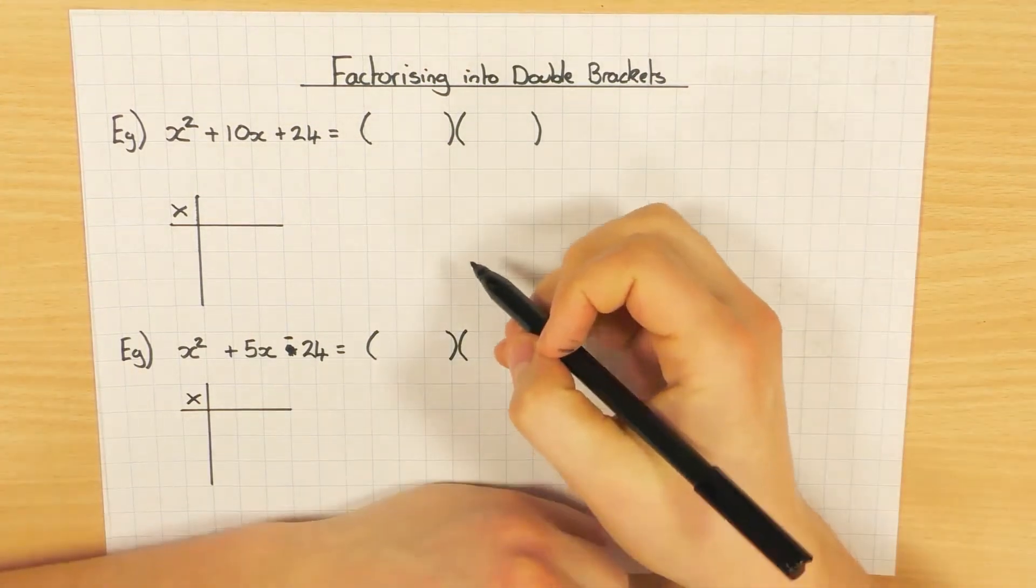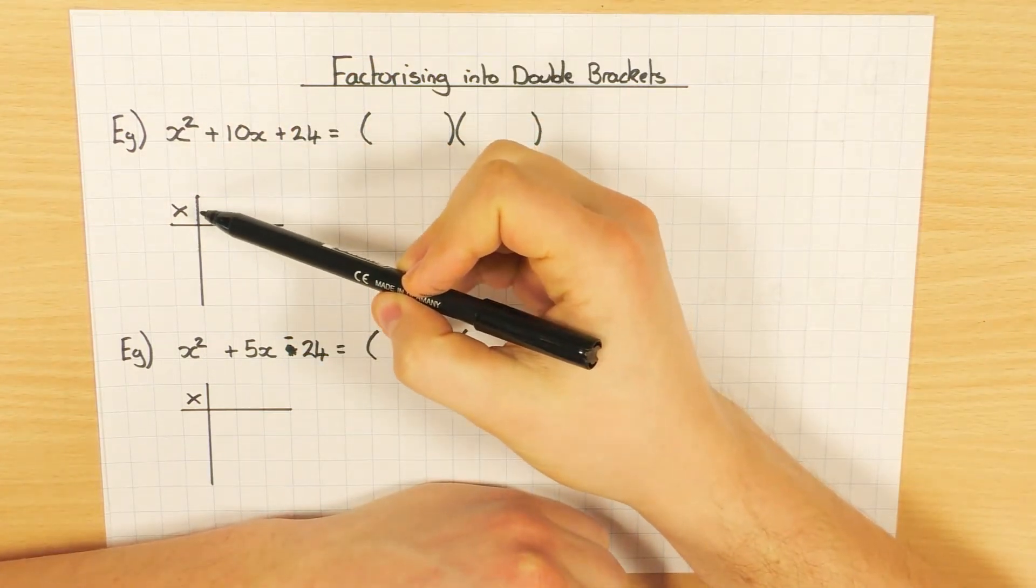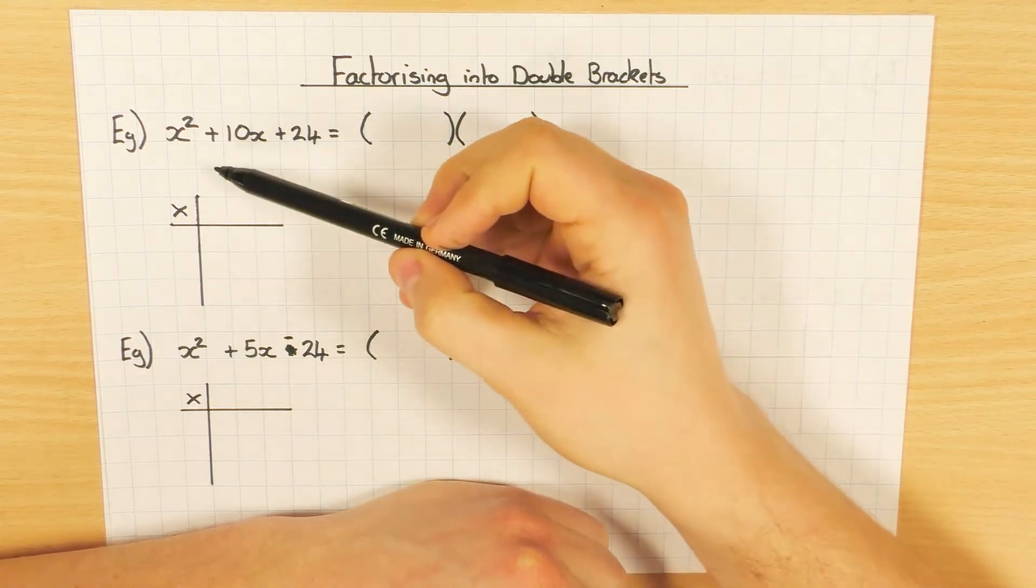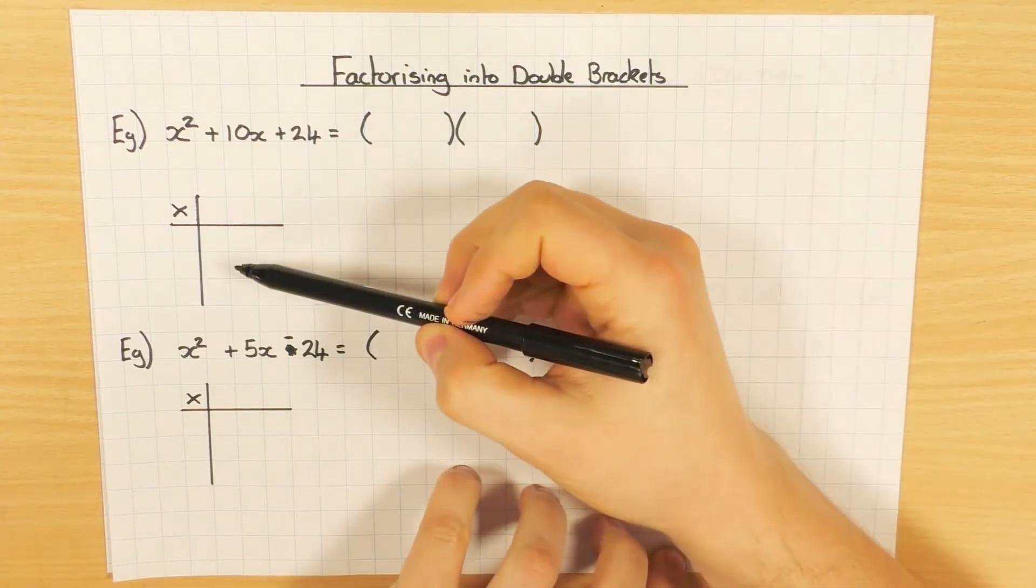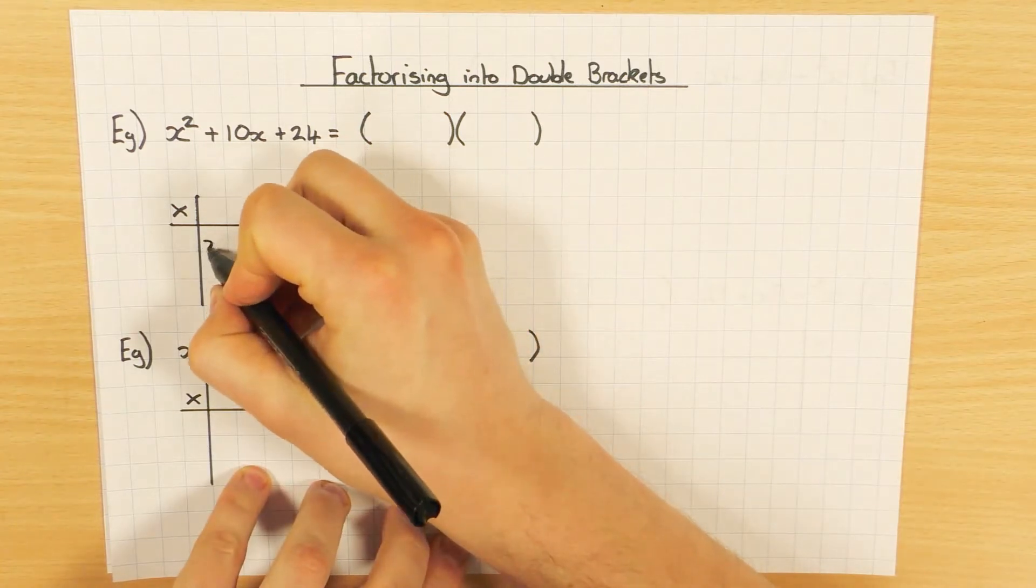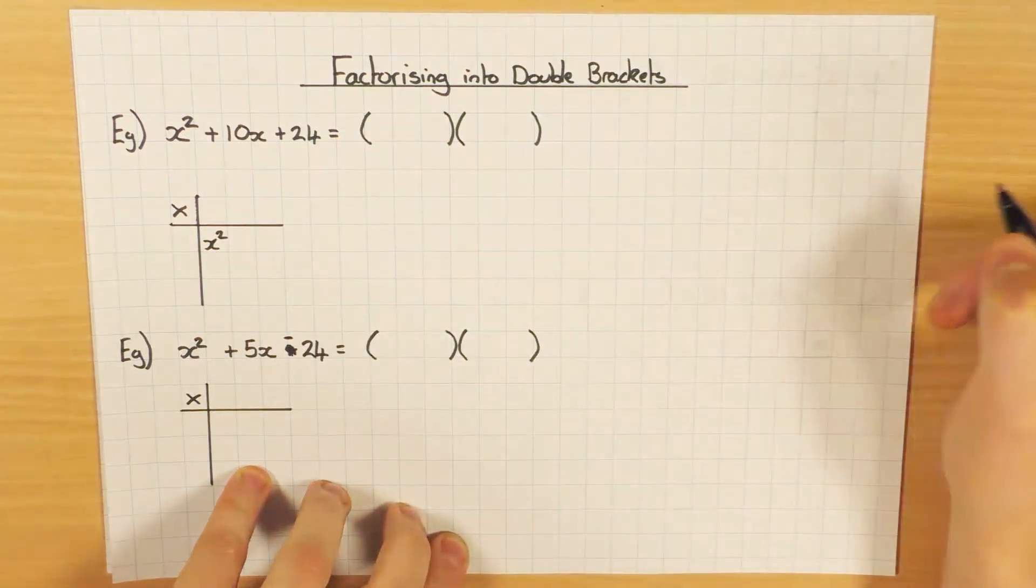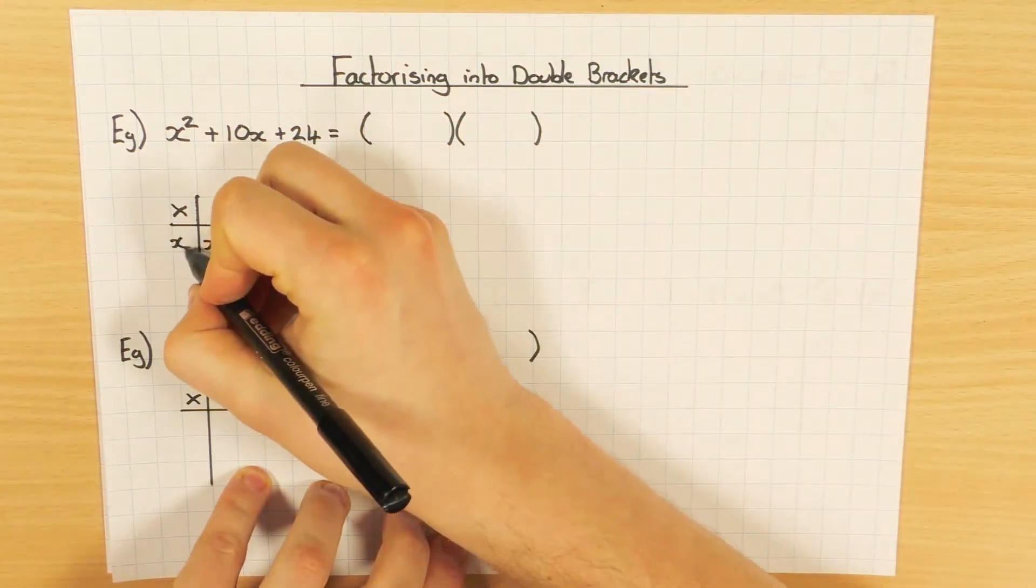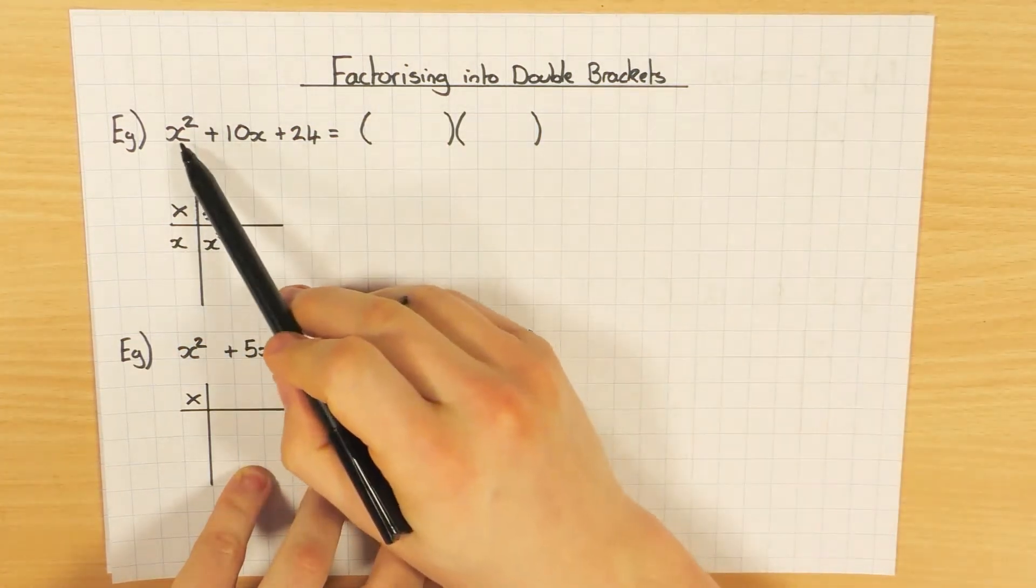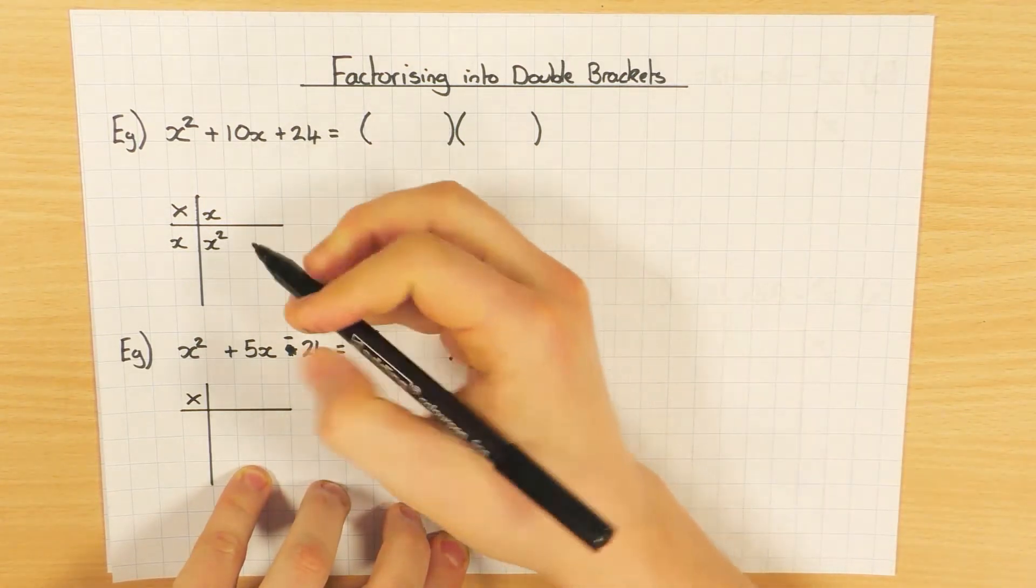So, looking at this here, going back into when we were multiplying double brackets, we used our grid. So here's my grid again, and because I'm factorising back into double brackets, I'm going to use this grid. Now, because I've got an x squared here, it's very obvious, especially when you've watched the expanding double brackets and how we did that, that the x squared goes there. And how do I get that? Well, x times x. Okay, so x times x gets me the x squared, which is the x squared there.